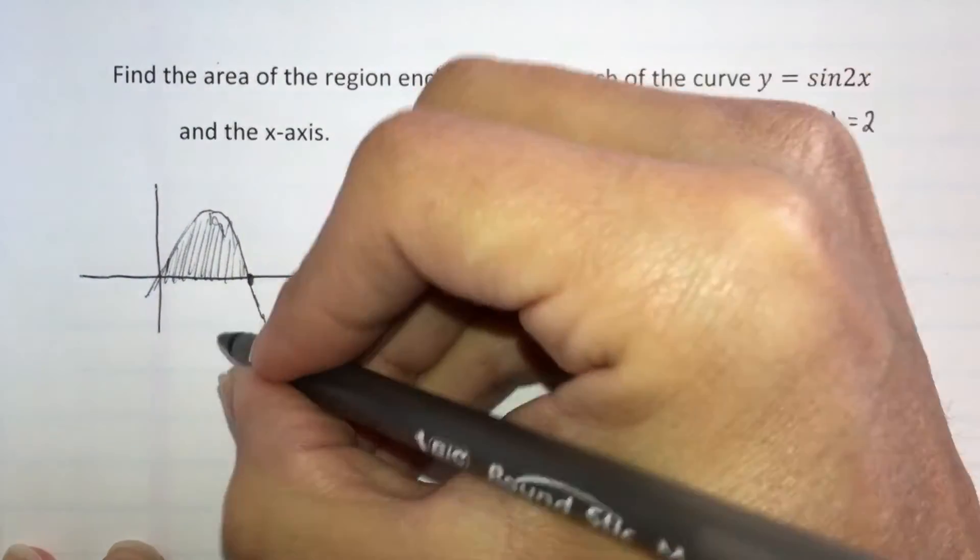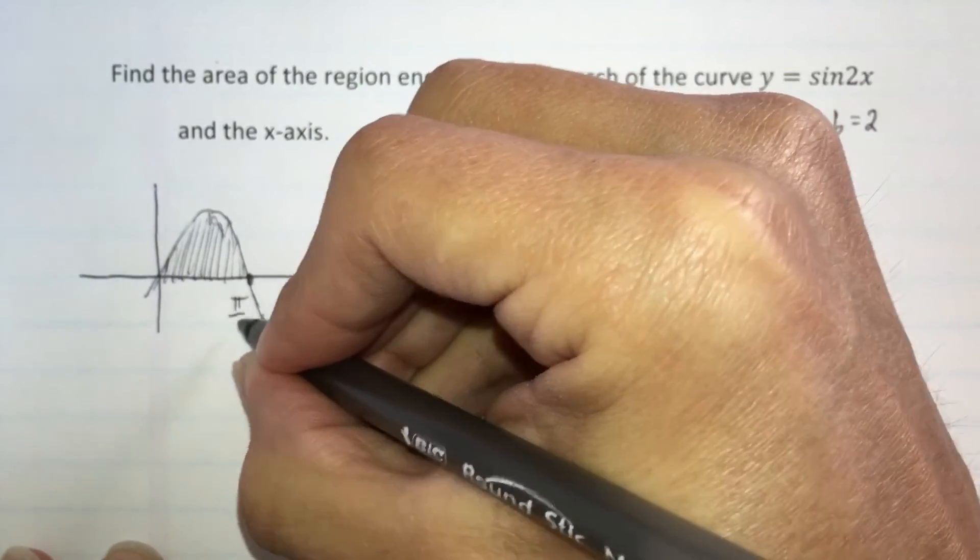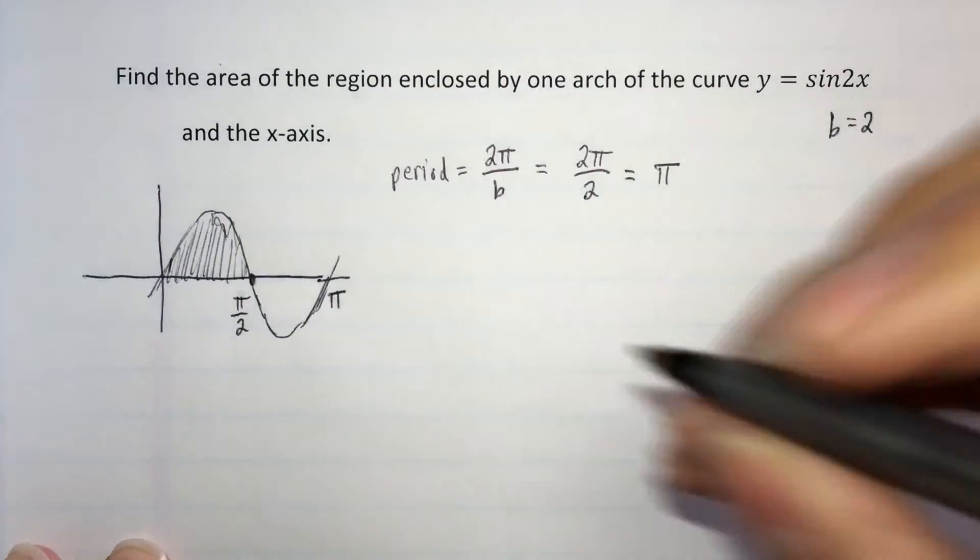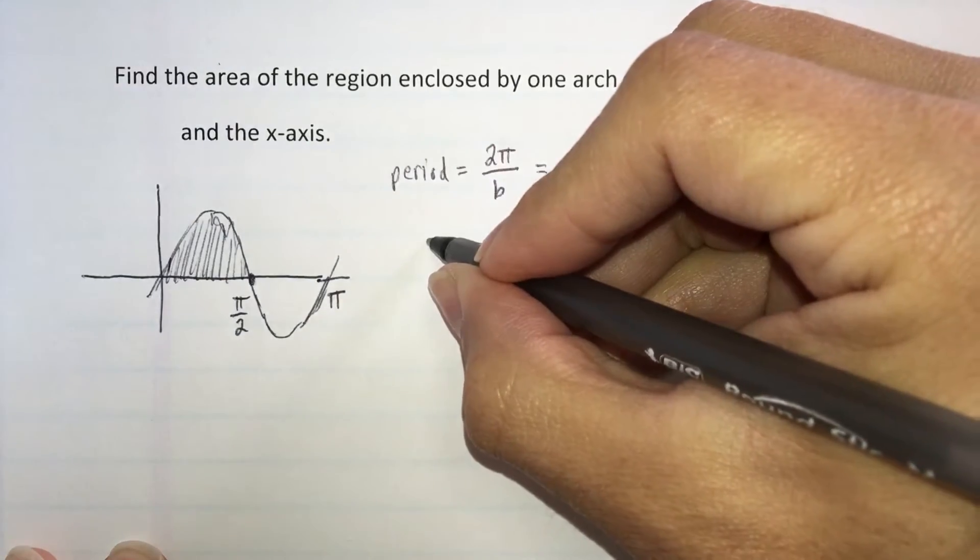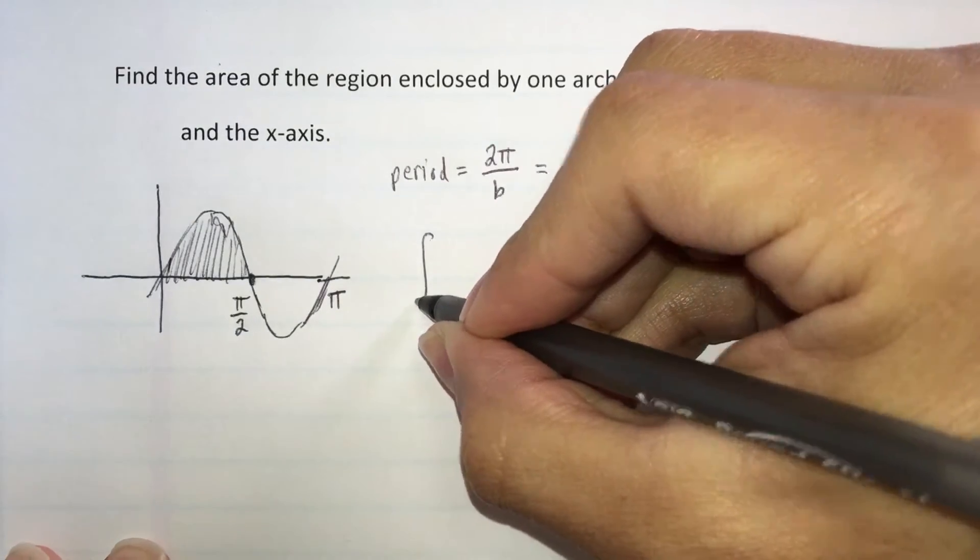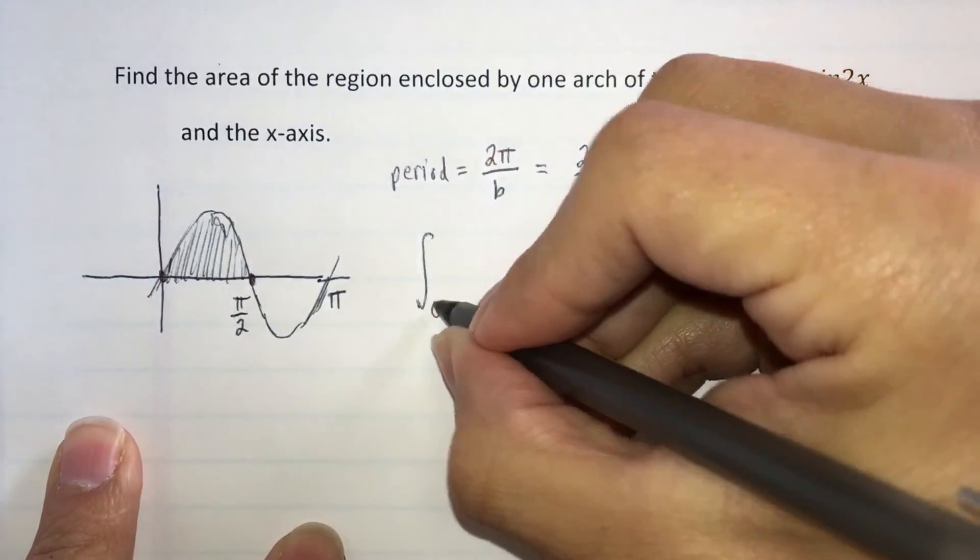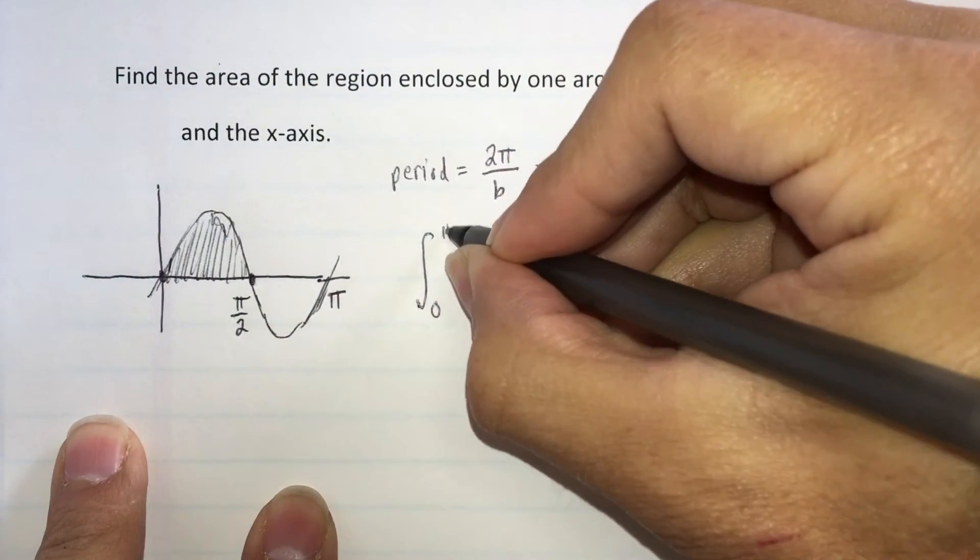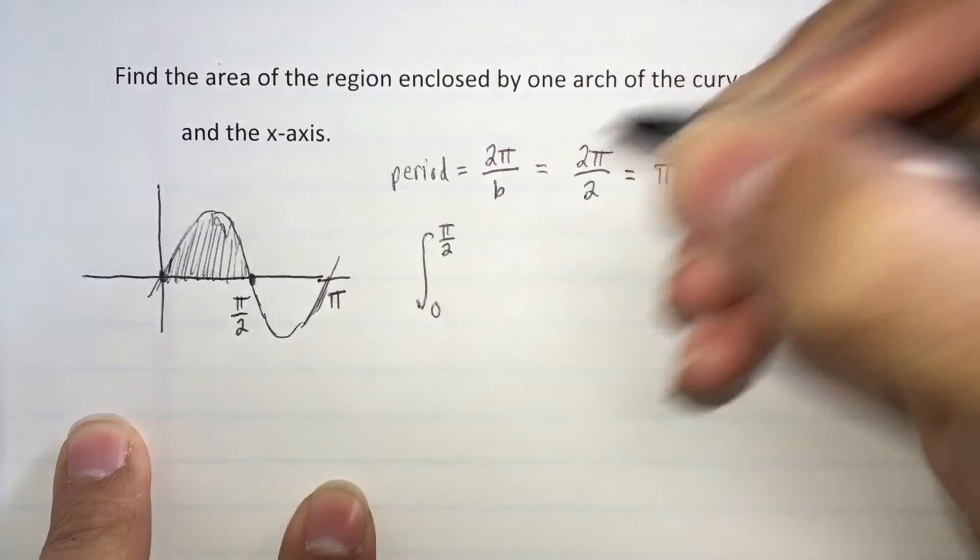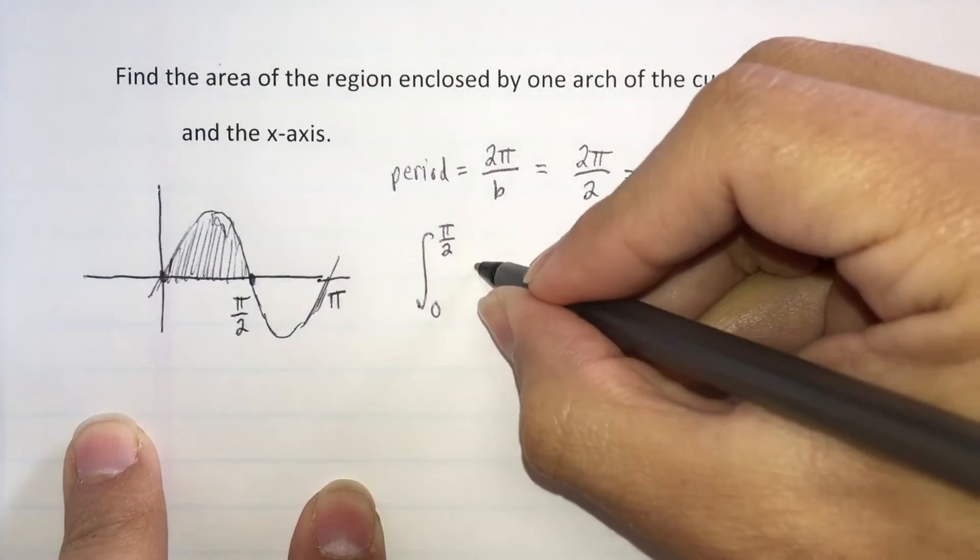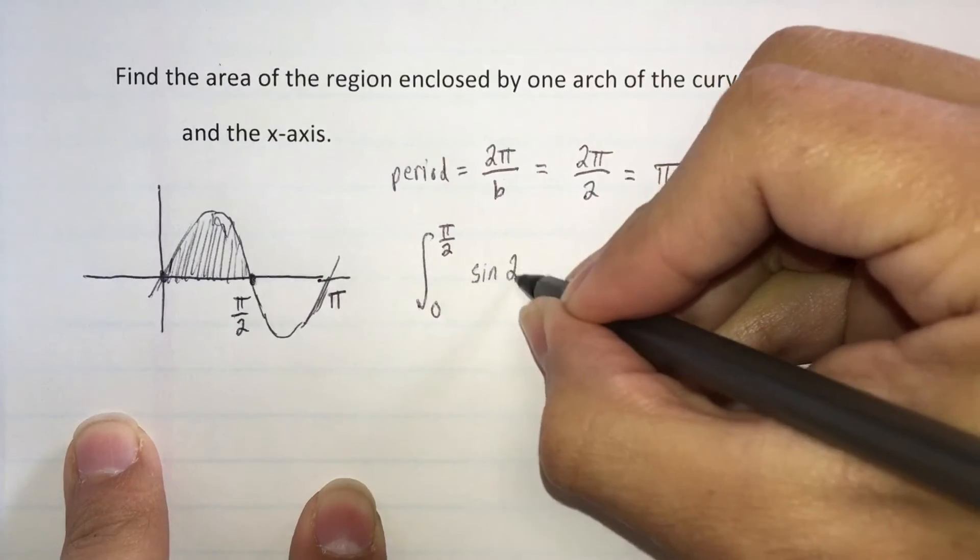Therefore, our first positive x-intercept is π over 2. So now we can write our integral. We're going to have to find the integral starting at 0 and we're going to go to π over 2 of the function sin 2x with respect to x.